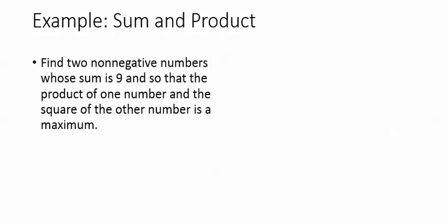Let's try another one where we're dealing with different sets of numbers. So find two non-negative numbers whose sum is 9 so that the product of one number and the square of the other number is a maximum. Again, in this case, writing the equation may be the most challenging part.